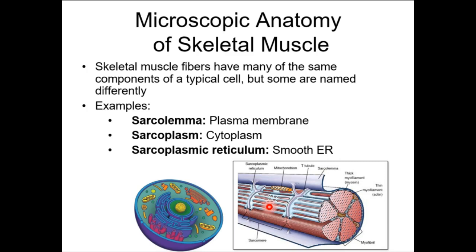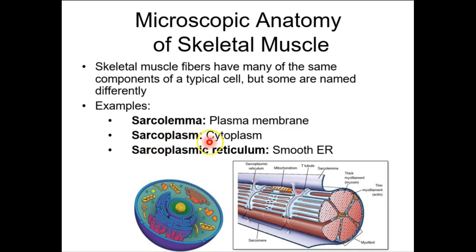Because muscle cells are so very specialized, scientists decided to rename common cellular features specifically for muscles. Instead of a plasma membrane, we call it the sarcolemma. Instead of cytoplasm, we call it sarcoplasm. And smooth endoplasmic reticulum is very specialized in muscle cells with an important function beyond metabolism — now we call it sarcoplasmic reticulum instead of endoplasmic reticulum.